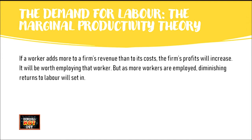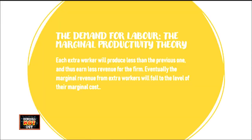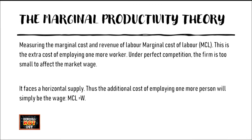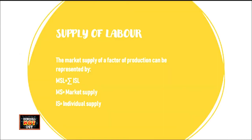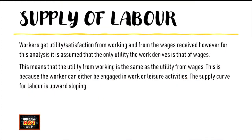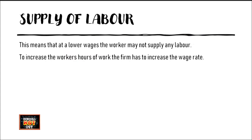If a worker adds more to the firm's revenue than their cost, the firm's profit will increase and it is worth having that worker. The supply of labour is represented by the sum of individual supply curves — the market supply of labour. Workers get satisfaction from wages, and since workers can choose to work or do leisure activities, the supply curve in this theory is upward sloping.